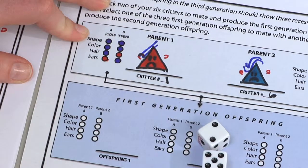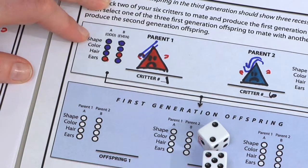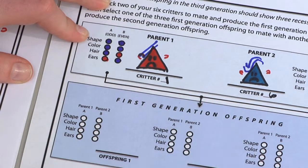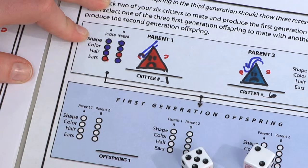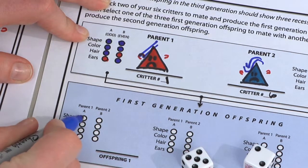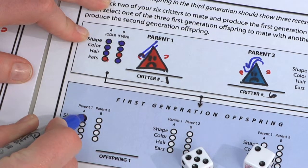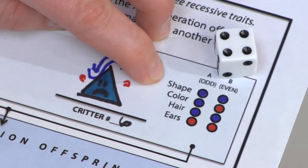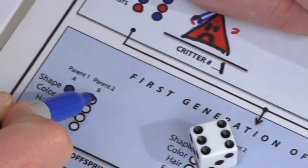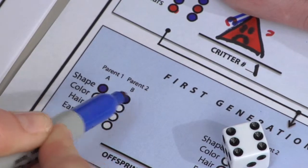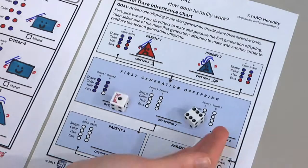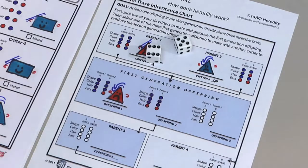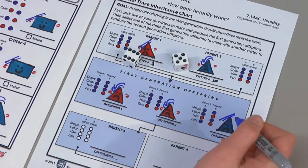Transfer their traits to the top of the trace inheritance chart and draw their features. Use dice to determine A and B alleles for the three offspring, starting with shape. For example, if the first roll is odd, transfer the odd circle's color of parent 1 to allele A of offspring 1. If the second roll is even, transfer the even circle's color of parent 2 to allele B of offspring 1. Repeat this process for each remaining trait and for each first generation offspring.